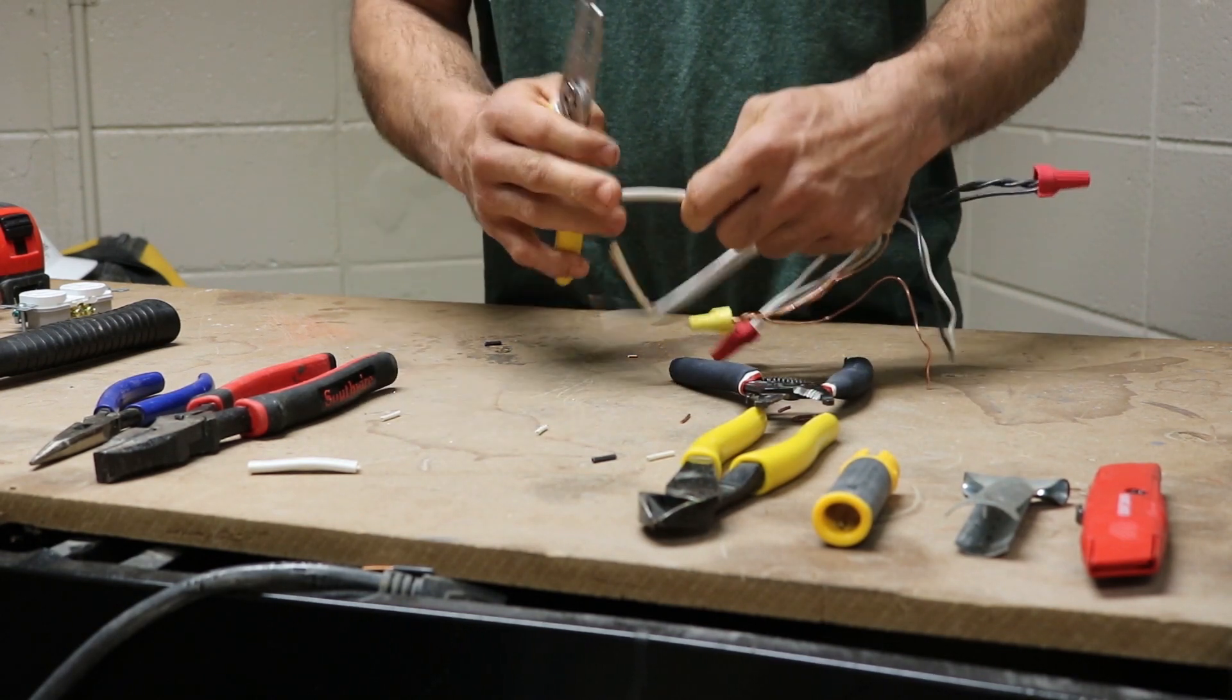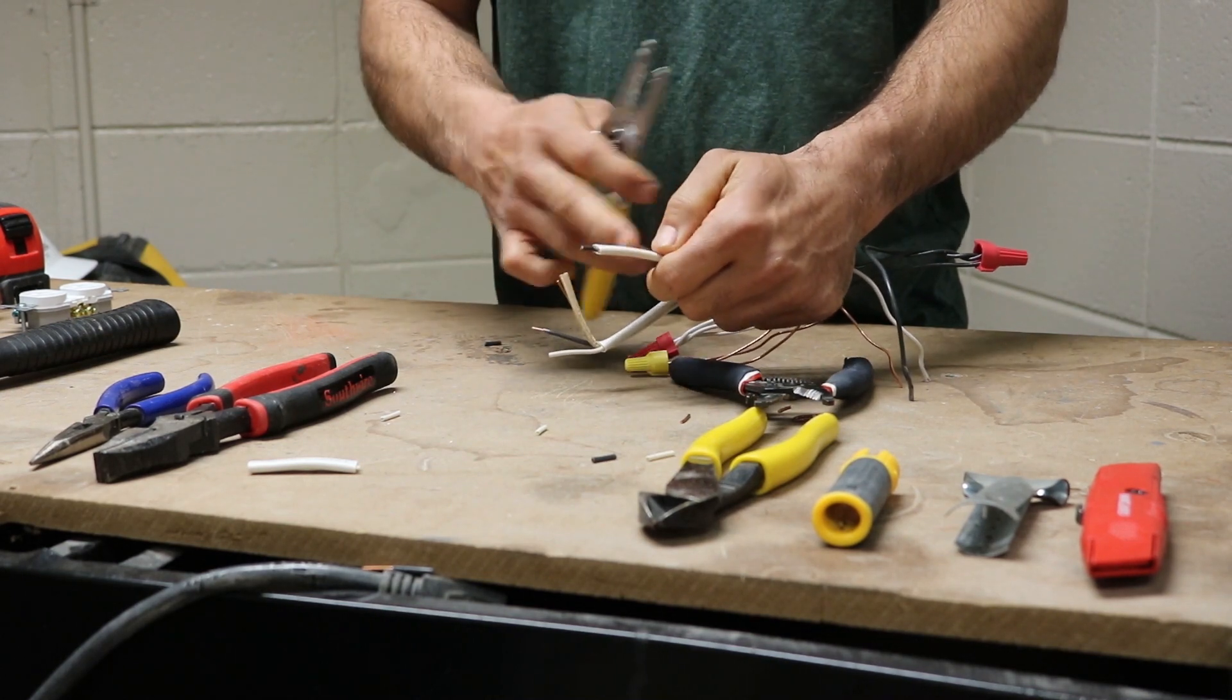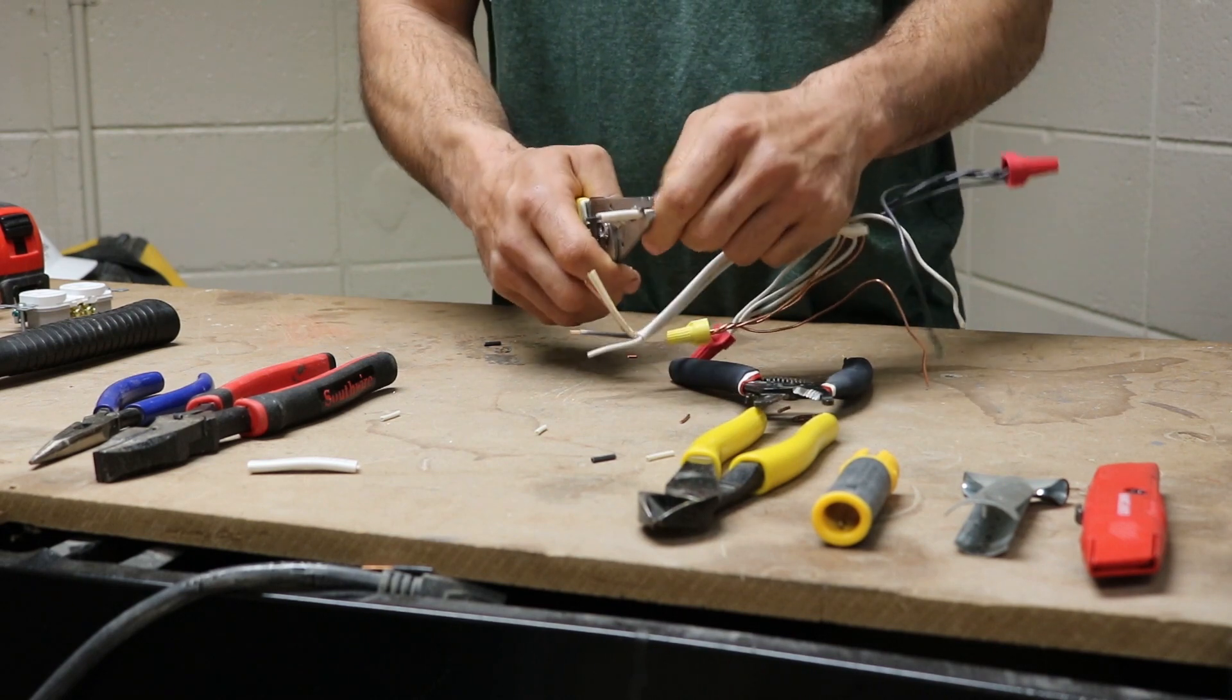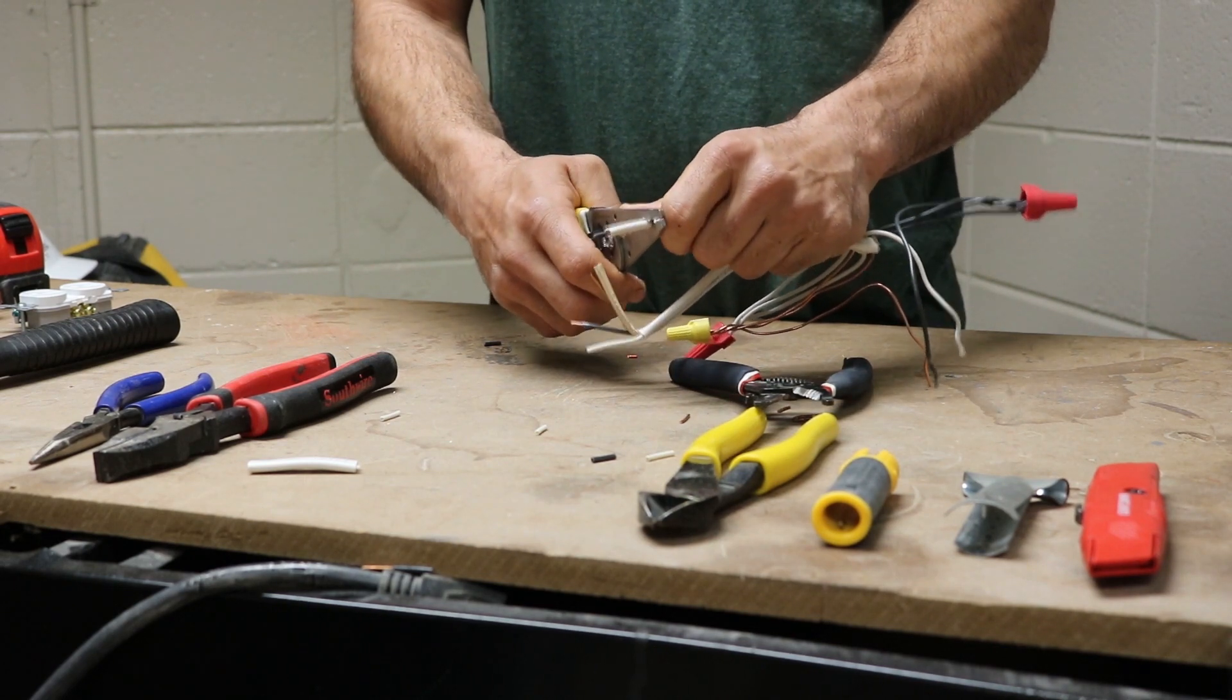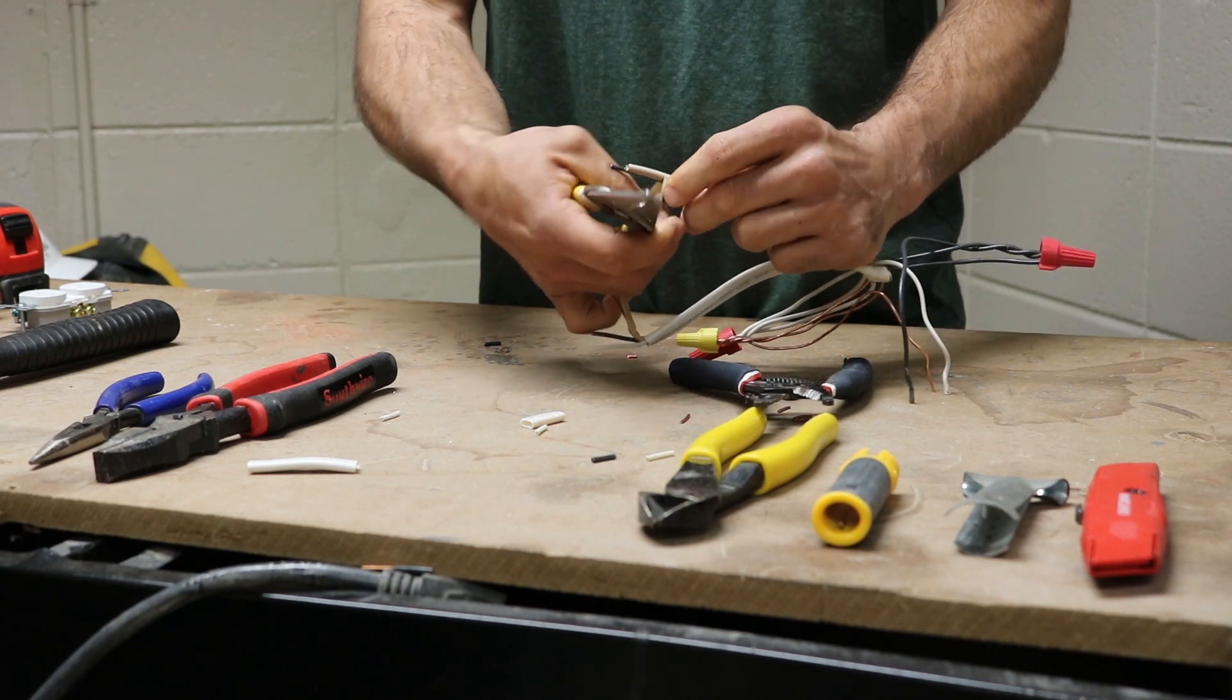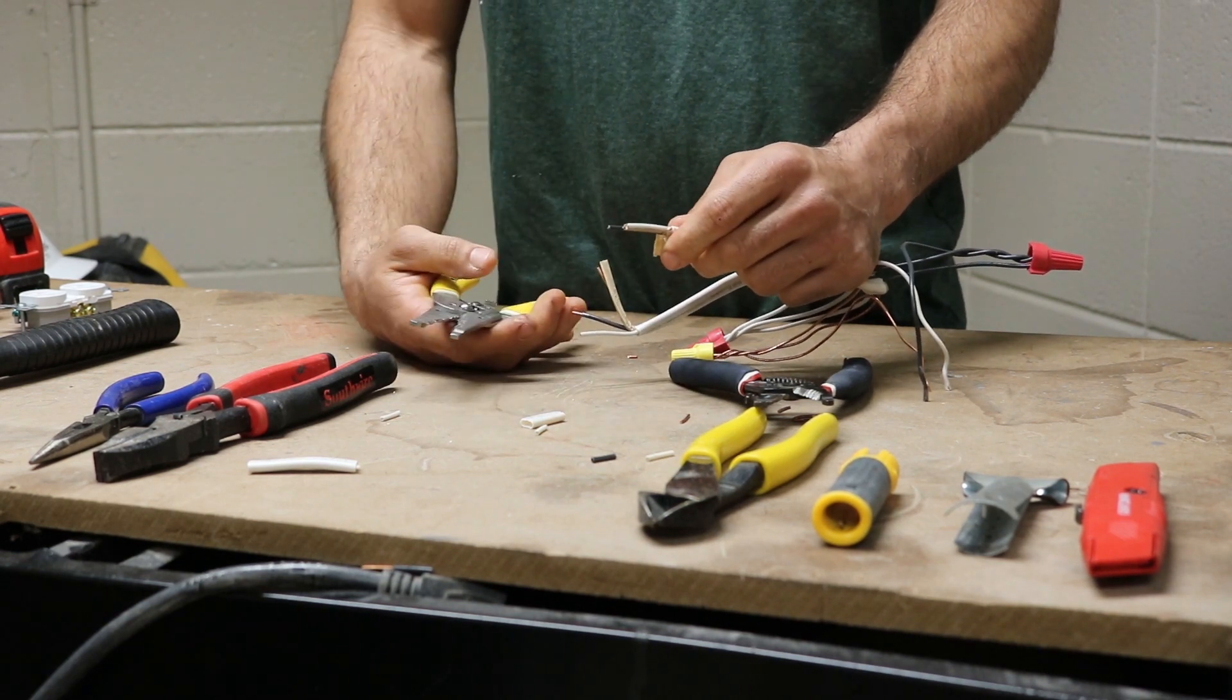To use the sheathing strippers, you find this is 14 gauge wire. I know because the sheathing is white. I use the top 14 gauge, 14-2. I just slightly push it down. Don't over crimp it. And cut the sheathing right off.